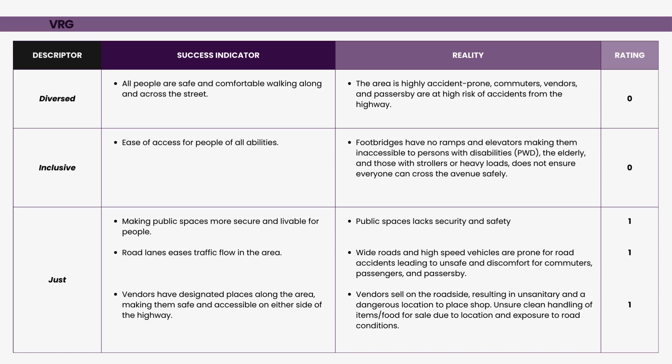Third, a just place makes public areas secure and livable for the community, where road lanes help ease traffic flow and vendors have designated safe yet accessible spaces. Unlike the current reality — where public spaces lack security, the excessively wide road and fast vehicles create accident-prone conditions, and vendors sell on the roadside in unsanitary and unsafe conditions — we rated justness a one.